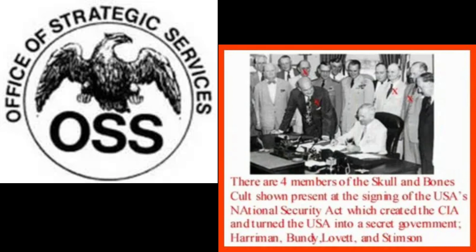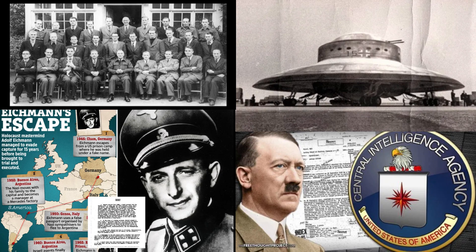CIA Connection to Nazi Germany. One controversial aspect of the CIA's early history is its connection to Nazi Germany. After World War II, the United States sought to capitalize on the expertise of German scientists and intelligence officers, despite their involvement in war crimes and atrocities. Operation Paperclip, a secret program authorized by President Truman in 1945, allowed more than 1,600 German scientists, engineers, and technicians to be brought to the United States to work on America's behalf during the Cold War.